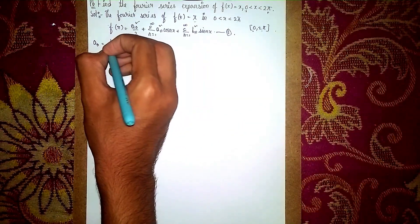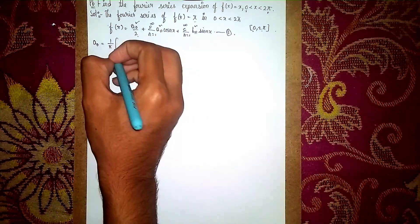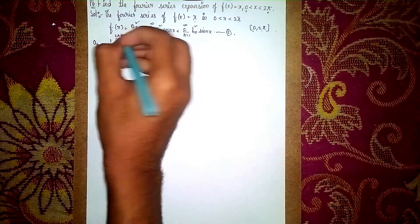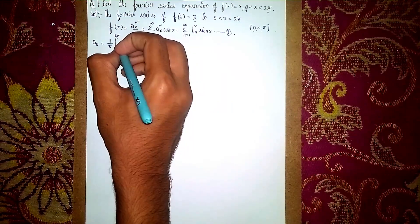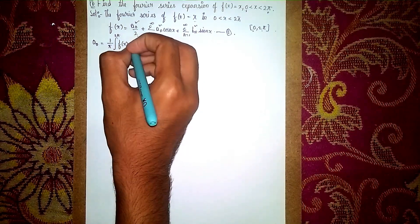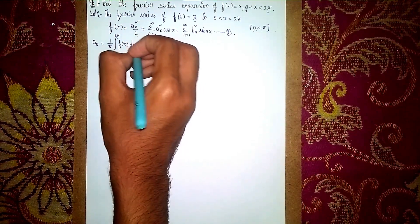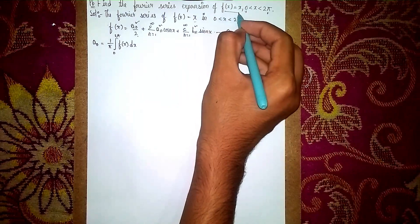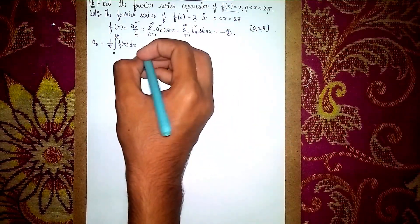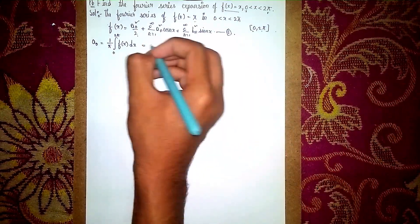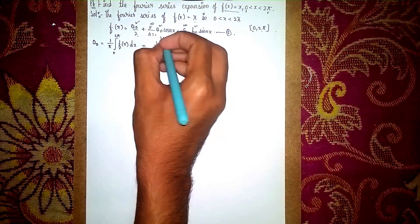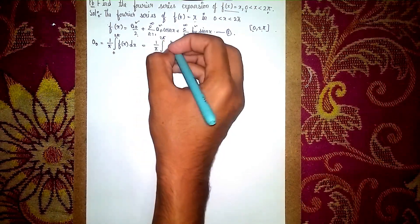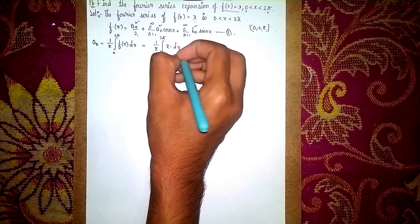So first, the a₀ formula: a₀ is equal to (1/π) × integral from 0 to 2π of f(x) dx. Now, what is f(x)? It's given as x. So it becomes (1/π) × integral from 0 to 2π of x dx.